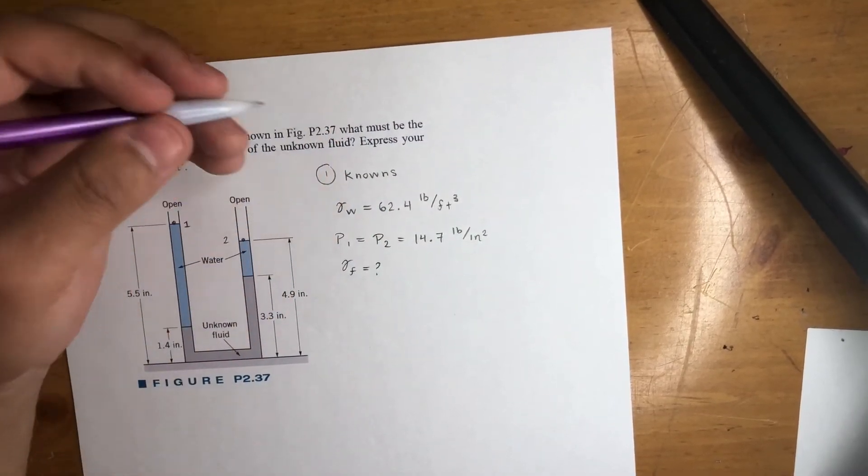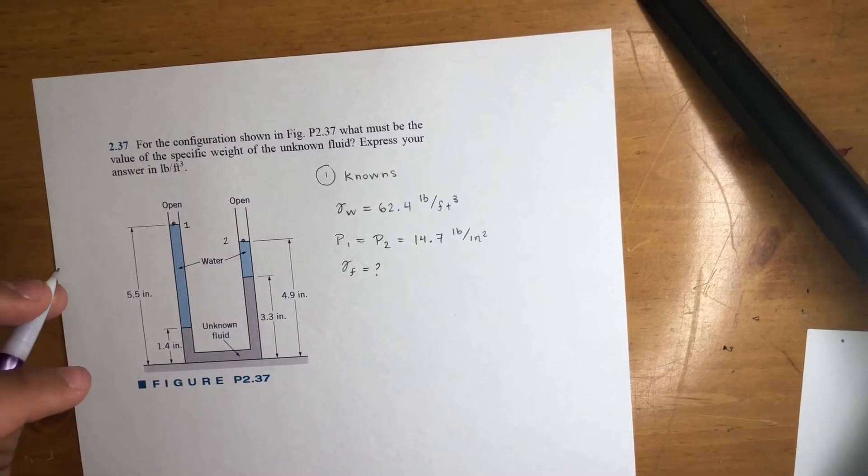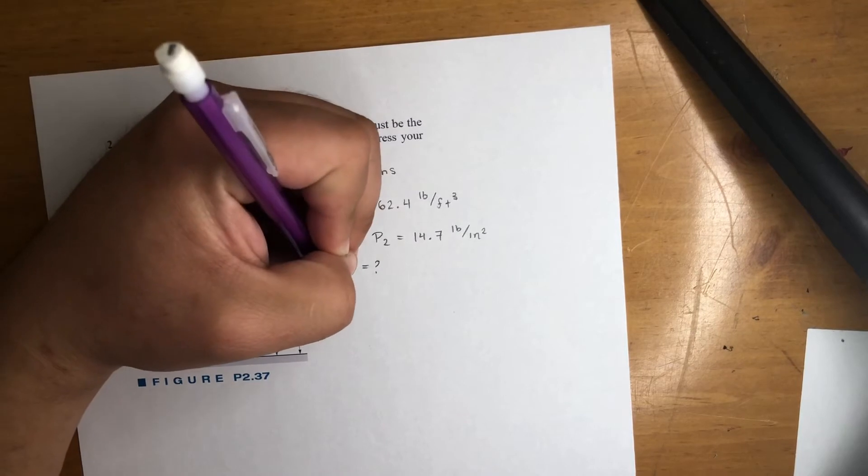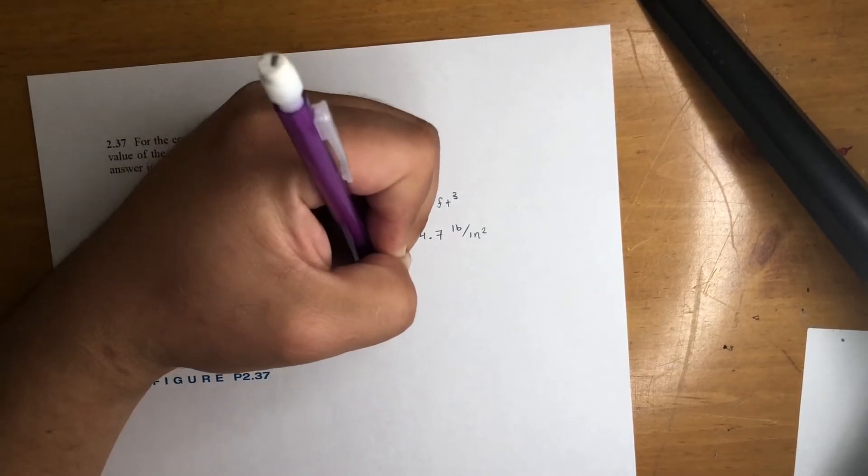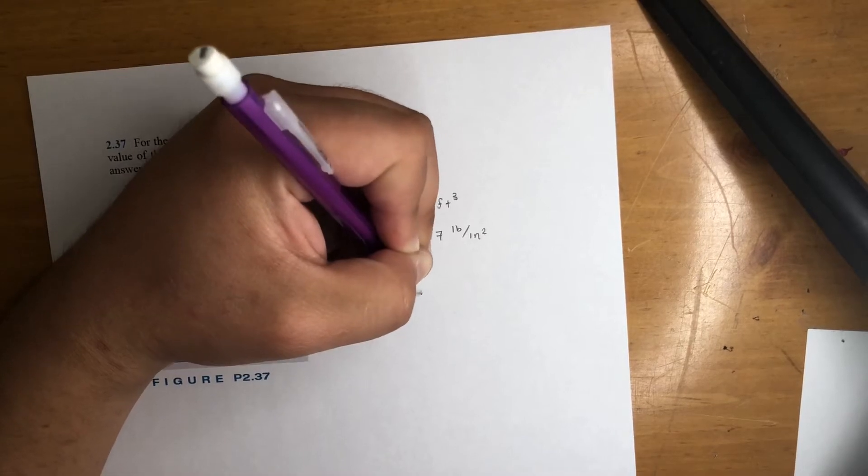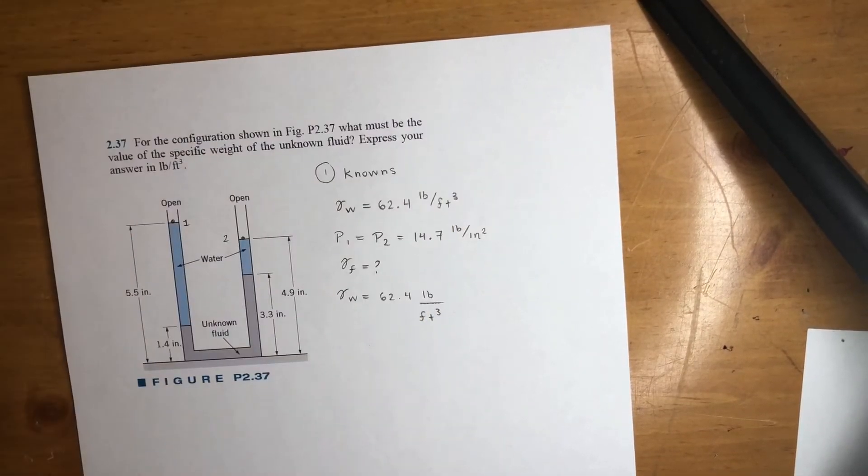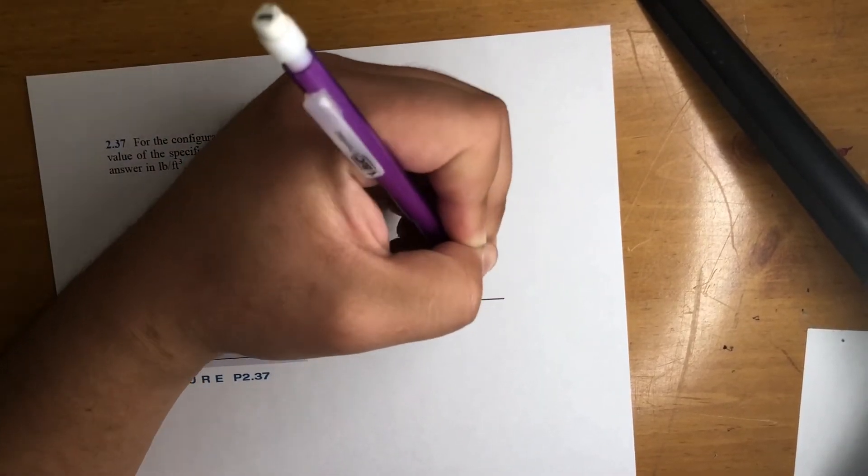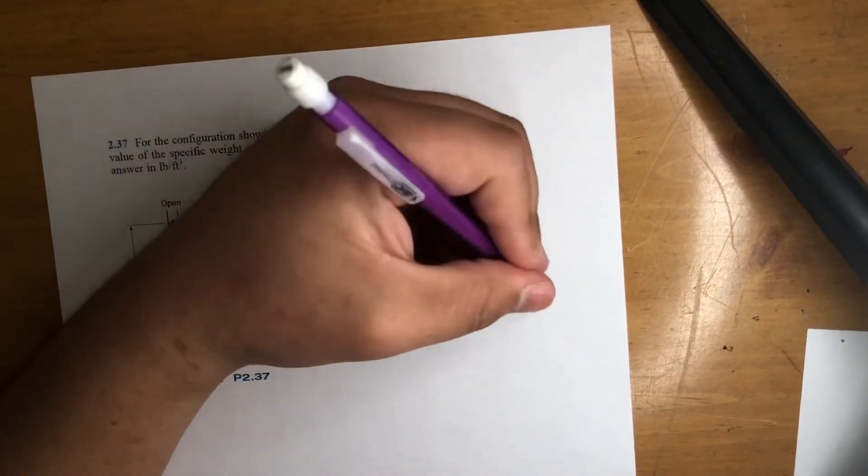Before we start organizing the equation, remember the units. So let's convert that. Gamma of water is equal to 62.4 pounds per feet cubed. Now let's multiply that because we want pounds per inch cubed, right, because we're working with inches.